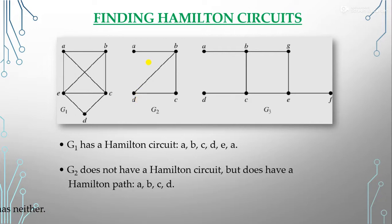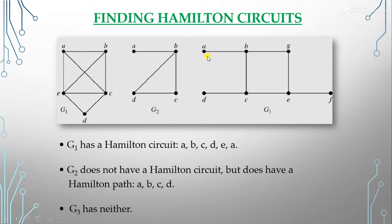For graph G3, we cannot cover all vertices in a single path without repetition. Therefore G3 has neither a Hamilton circuit nor a Hamilton path.